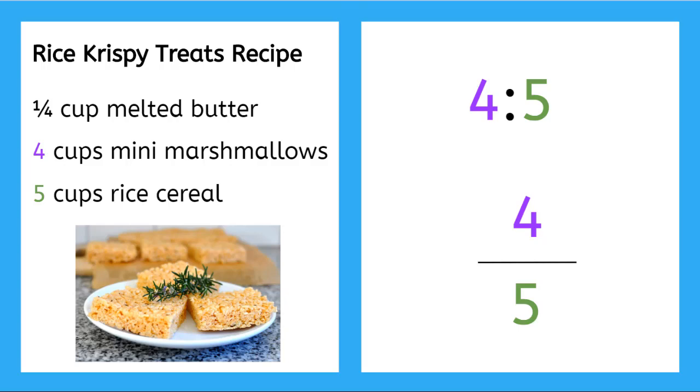Remember how important it is to write the order of the numbers in the ratio and the rate. Even when the units are the same, the numbers represent amounts of different items. Always write the numerator as the first item given and the denominator as the second item given.